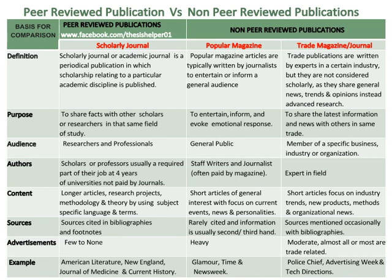Examples of scholarly journals include American Literature, New England Journal of Medicine and Current History. Examples of popular magazine articles include Glamour, Time and Newsweek. Examples of trade publications include Police Chief, Advertising Week and Tech Directions.